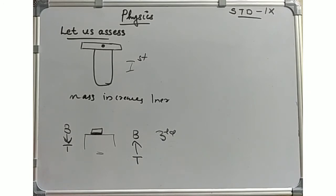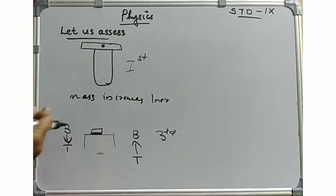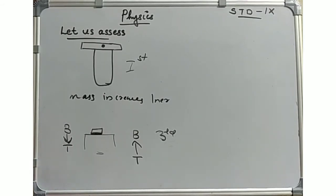What is the scientific principle behind it? In this example, we have dust particles on the carpet. When you hit the carpet with a stick, the carpet moves. The dust particles, due to their inertia of rest, tend to remain at rest and thus separate from the carpet.